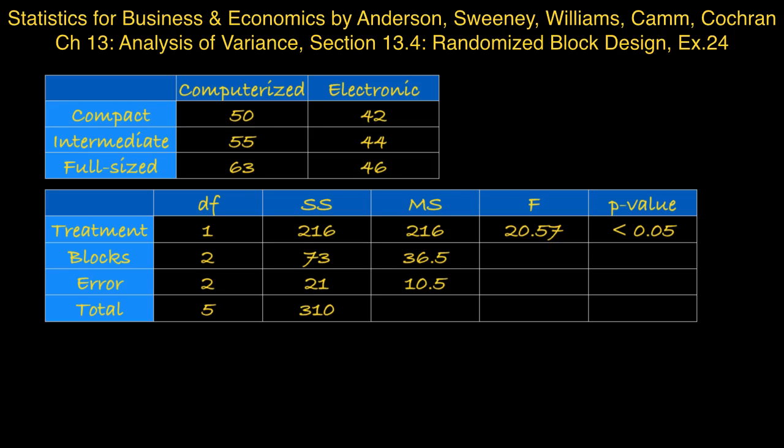Next, the blocks sum of squares. This time we use the means for the different types of car. So for compact cars, the mean is 46. For intermediate cars, the mean is 49.5. And for full-sized cars, the mean is 54.5. And if we use those three numbers together with the overall mean, and use the formula to calculate the sum of squares for blocks, that comes to 73.